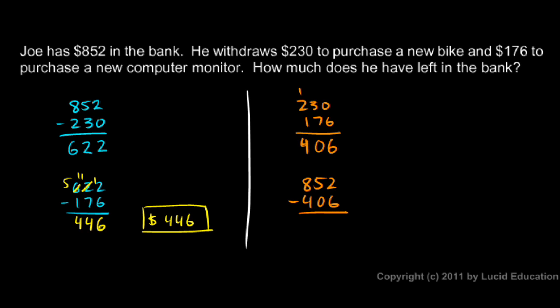So he starts with $852 and then he takes away a total of $406. So what he has left should be my final answer. And I can do this. The $2 minus the $6 right there is a problem. I need to come over to the $5 and make it a $4. And then stick a $1 on that $2. So I have $12 minus $6.